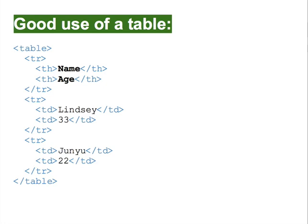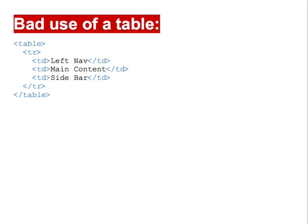Another group of elements that are often misused is the table. Here's an example of a good use: a table element contains multiple table row (TR) elements, each containing table header (TH) or table data (TD) cells. This table has two columns with headers and two rows — Lindsey is 33, and Junyu is 22. This is a good use because it reflects the meaning of the content, which is tabular data. A giveaway of good table use is that it has column headers and multiple rows. A bad use of a table is when there's nothing tabular about the data — no headers, only one row — and the developer is trying to use table cells to create a three-column layout. Layout is about presentation, not content meaning, so it has no place in HTML. That's a job for CSS.